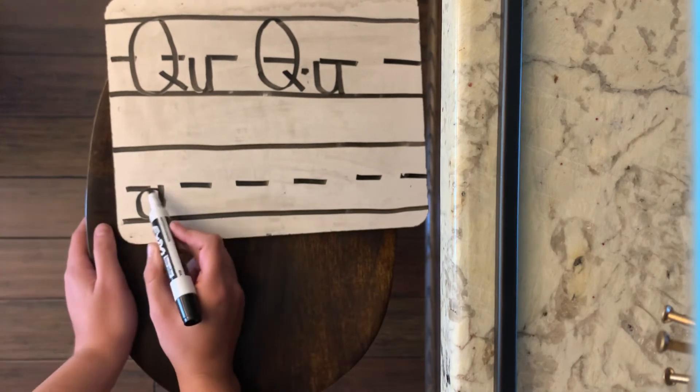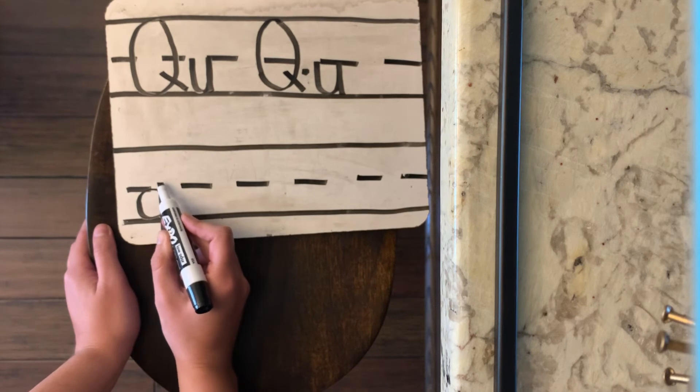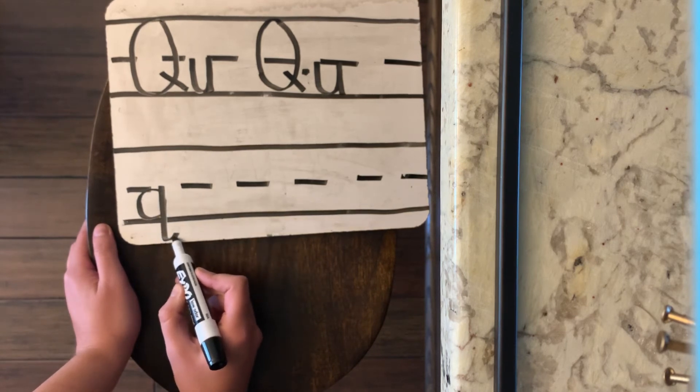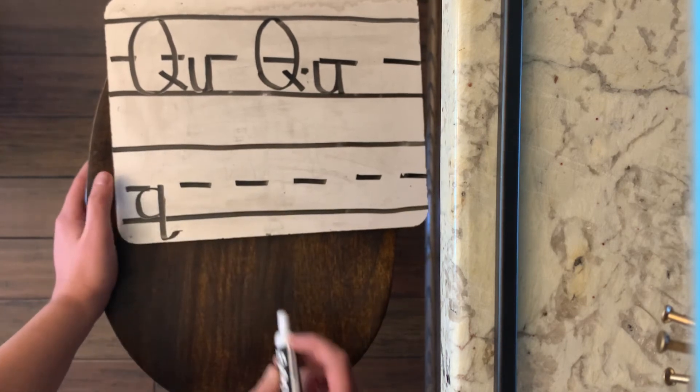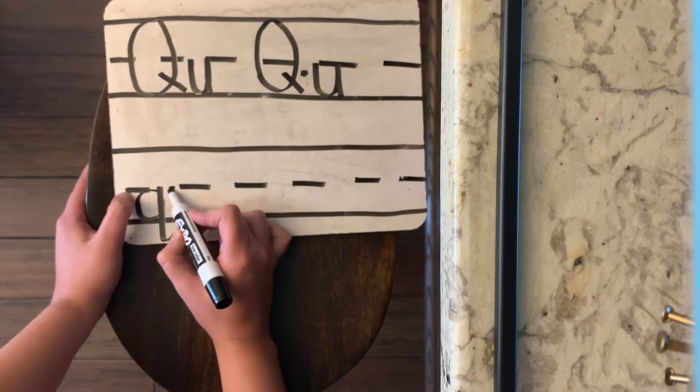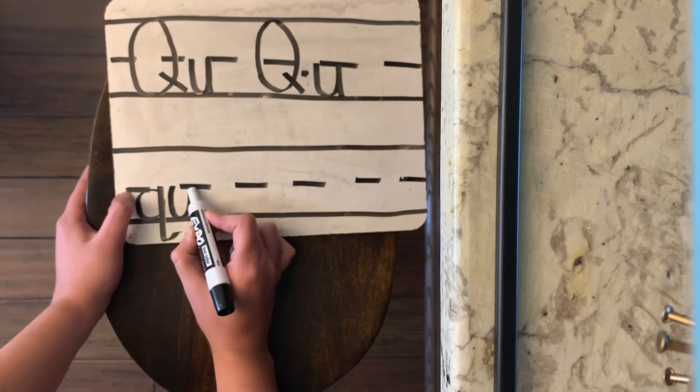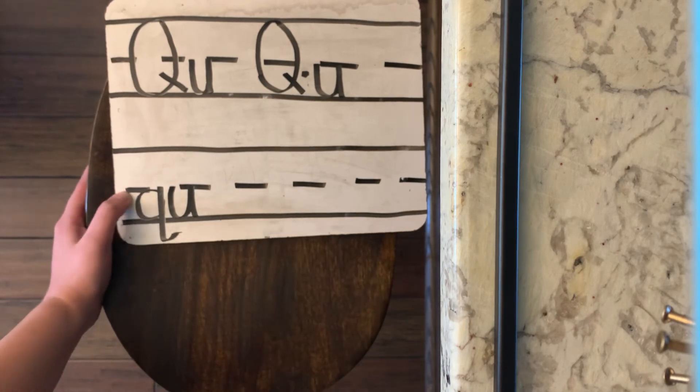Okay? So we made a magic C, go straight up like a helicopter, come down, and we're going to curve backwards. So Q, and then let's do that same U that we already did. Q, U. Okay?